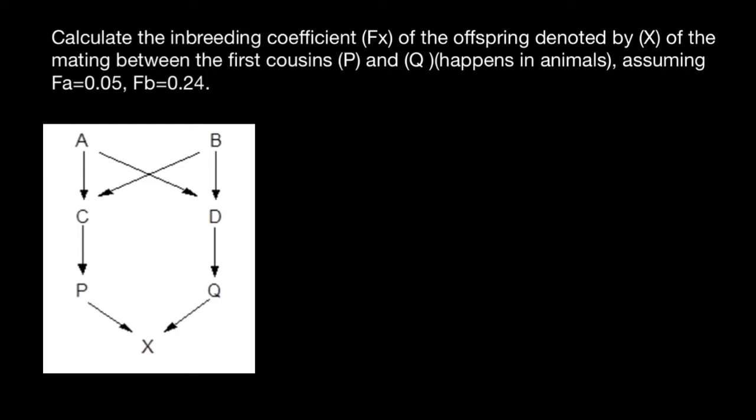This happens in animals, assuming that F stands for inbreeding, inbreeding of A is 0.05 and inbreeding of B is 0.24.